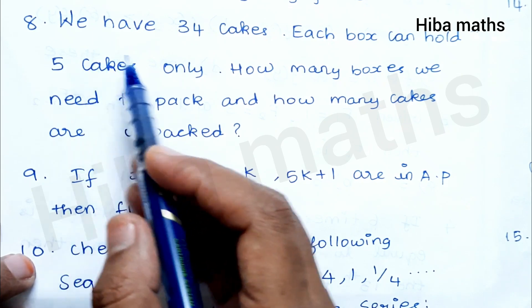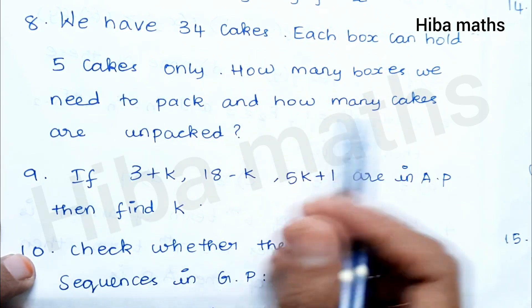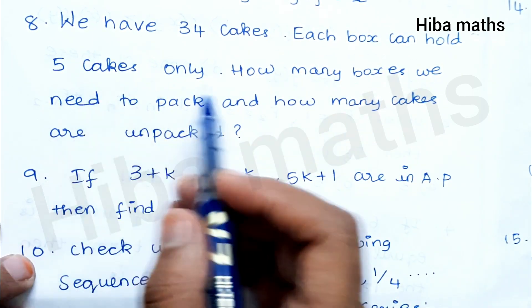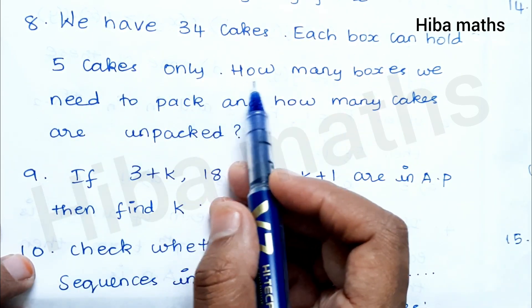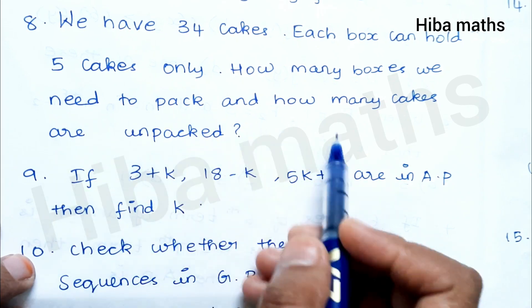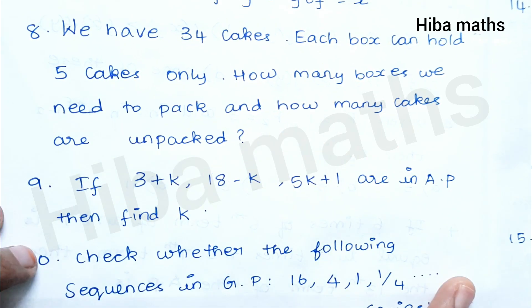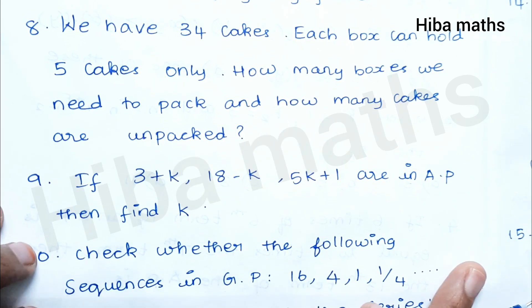If we have 34 cakes and each box can hold 5 cakes, how many boxes can we pack and how many cakes are left unpacked? This is a second-chapter question.